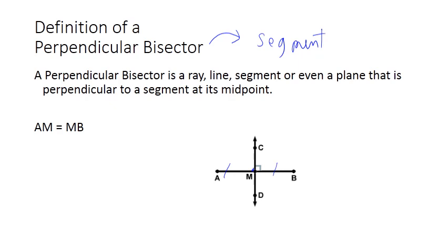So the perpendicular bisector is drawn perpendicularly to a segment through its midpoint. So as you see in this figure, I have AM equals MB because M is the midpoint of the segment AB, and CD is the perpendicular bisector of AB.